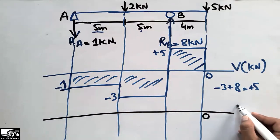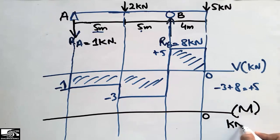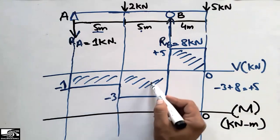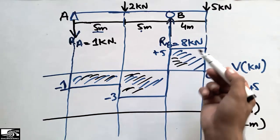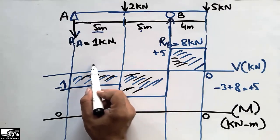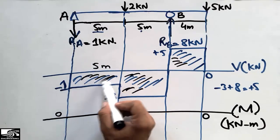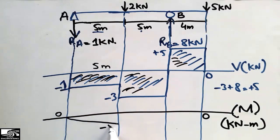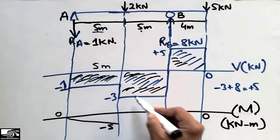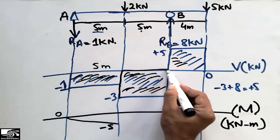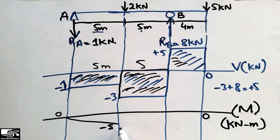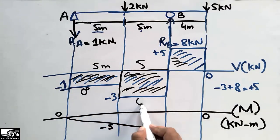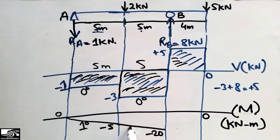Now to draw the bending moment diagram, we again draw reference lines in units of kN·m. We find the bending moments using the areas of the shear force blocks. Starting from the hinge (bending moment = 0): the first rectangle has depth −1 and width 5 m, giving an area of −5 kN·m. The next rectangle has depth −3 and width 5 m, giving −15 kN·m. Adding −15 to −5 gives a bending moment of −20 kN·m at 10 meters from the left support.